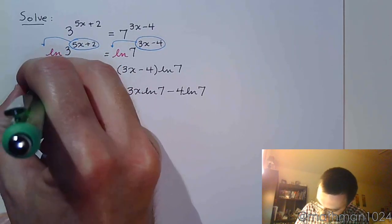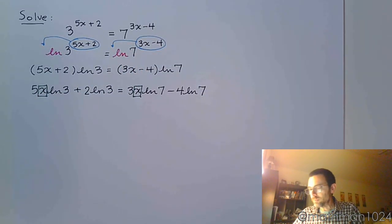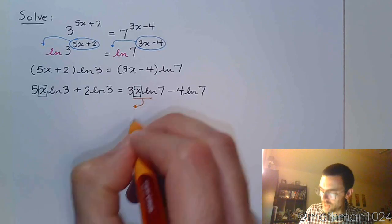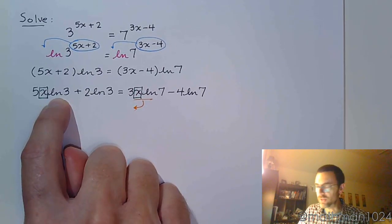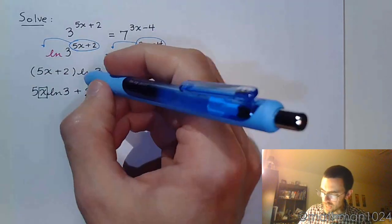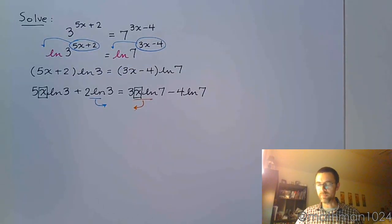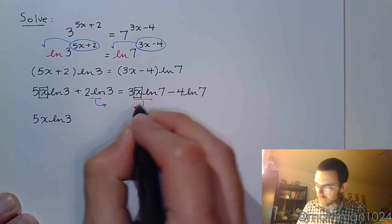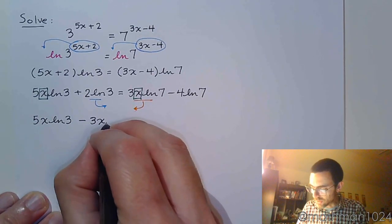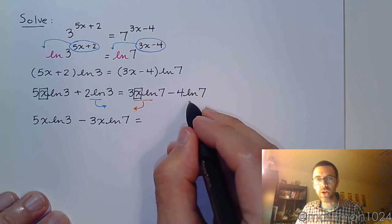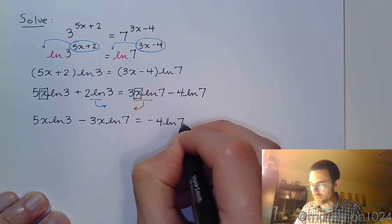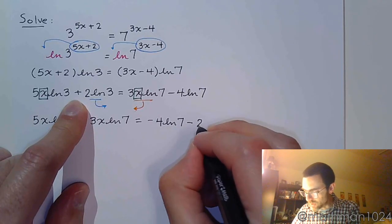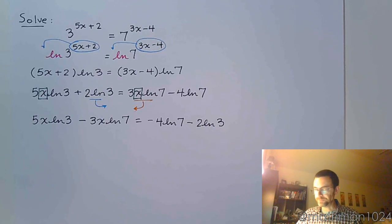But make sure you pay attention to the fact that your variable is here and here. So what we want to do is we want to move our terms so that all the variables are on the same side and the constants are on the other side. So I'm going to move this guy over here because when I move him over, I'm going to have both the x's on the left side. And when I do that, I should move this straight up constant term to the other side. Make sure you pay attention to your signs when you do this. So this is 5x·ln(3), this is going to come over as a negative, so -3x·ln(7). Over here, I already had -4·ln(7). And when I move this over, it becomes a minus now 2·ln(3).